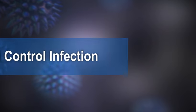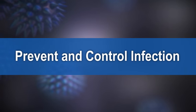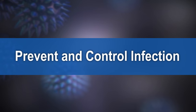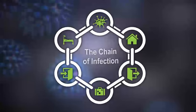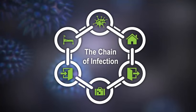To prevent and control infection, first we need to understand how infections spread through the chain of infection. The chain of infection is made up of six different links. Infection occurs when each link is present in this order.